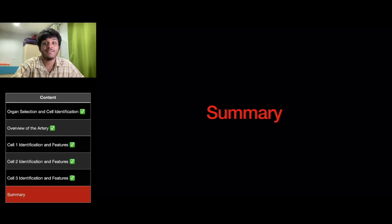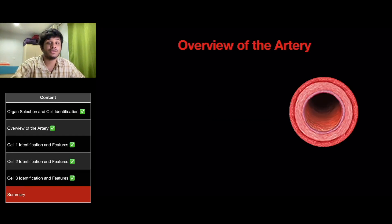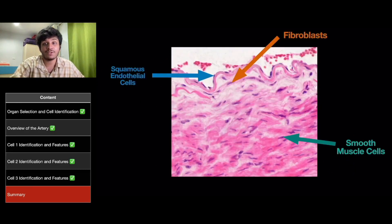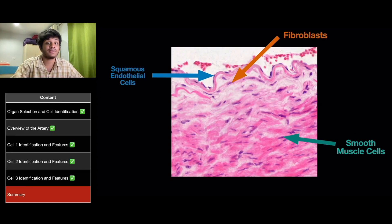To summarize this presentation, we have seen that the artery has three walls, which are the tunica intima, the tunica media, and the tunica externa. And when we zoomed into the tunica intima and tunica media, we identified three cells, which are the squamous endothelial cells, the fibroblasts, and the smooth muscle cells.